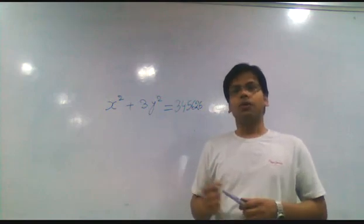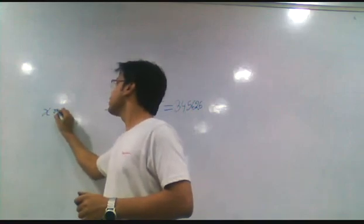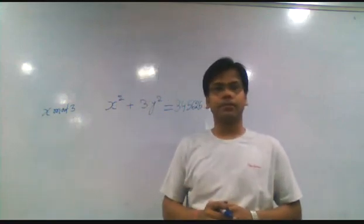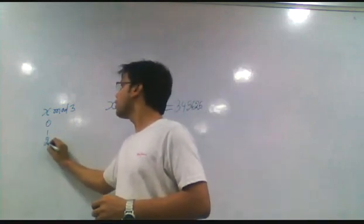We know when x is divided by 3, the remainders are either 0, 1, or 2.